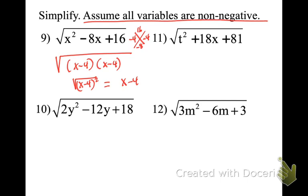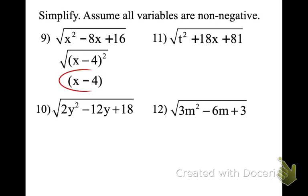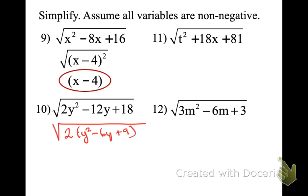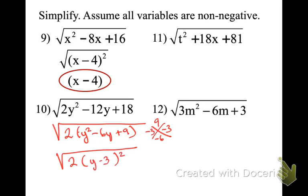When you look underneath the radical, we're going to have a GCF first, otherwise there's nothing you can simplify. For √(2y² minus 12y plus 18): factor out the GCF, leaving 2 times (y² minus 6y plus 9). Then factor the trinomial — what multiplies to 9 and adds to negative 6? That's negative 3, negative 3, so it's (y minus 3) squared. What I'm pulling out is (y minus 3), and what's left is the 2 — the GCF.